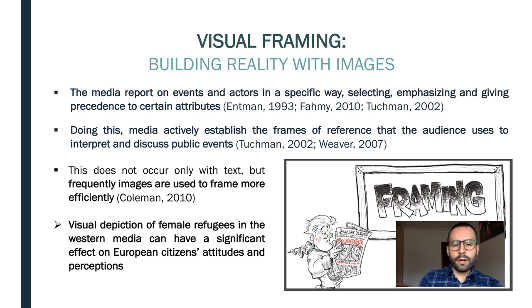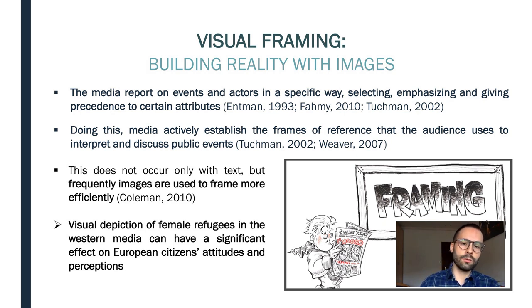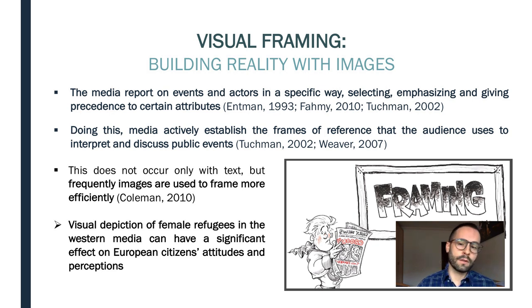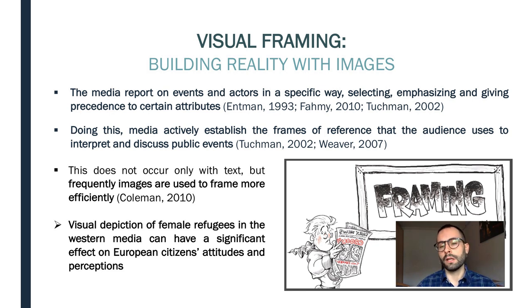Regarding the theoretical framework, according to framing theory, we know the media report on events and actors in a specific way — selecting, emphasizing and giving precedence to certain attributes. This means that the media actively establish the frames of reference that the audience uses to interpret and discuss public events. But this doesn't occur only with texts; frequently, photographs are used to frame more efficiently because of their expressive and symbolic power, and for being always understood as part of reality.